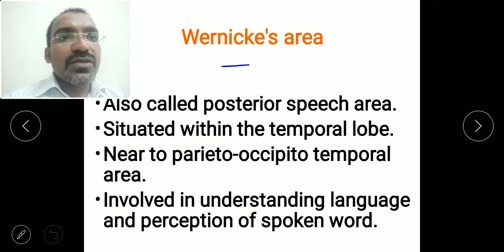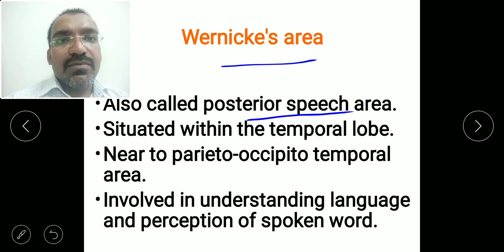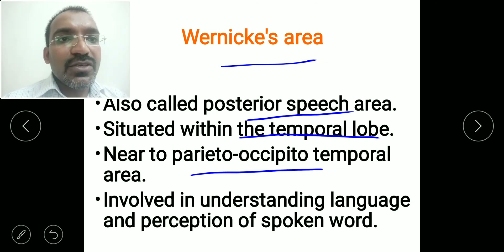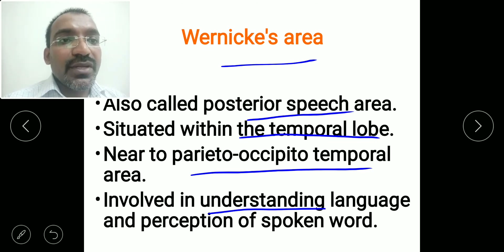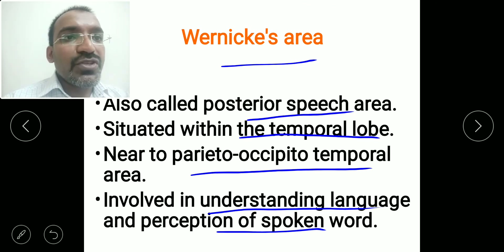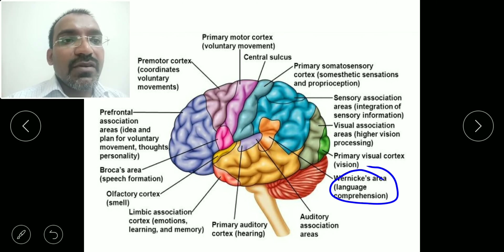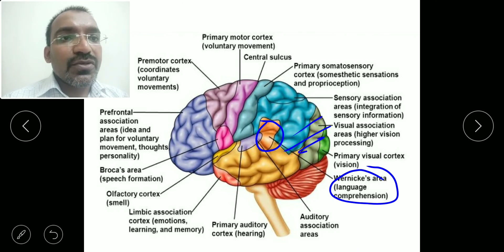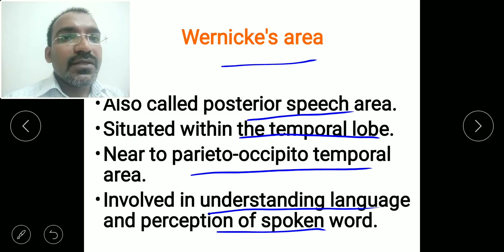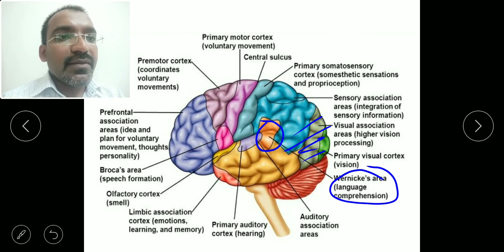Wernicke's area, also called the posterior speech area, is situated within the temporal lobe, very near to the parieto-occipito-temporal area. It is involved in understanding language and the perception of a spoken word. Here you can see Wernicke's area, which is responsible for language comprehension and understanding spoken words, located in the temporal lobe close to the parieto-occipito-temporal region.